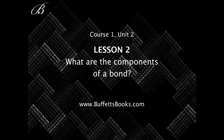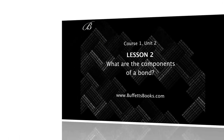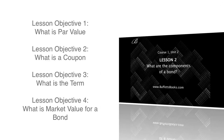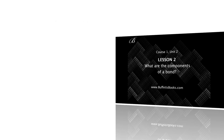Welcome to Course 1, Unit 2, Lesson 2: What are the Components of a Bond? There are four lesson objectives. The first is understanding what the par value is. The second is understanding what the coupon rate is. The third is understanding the term. And the fourth is understanding market value.